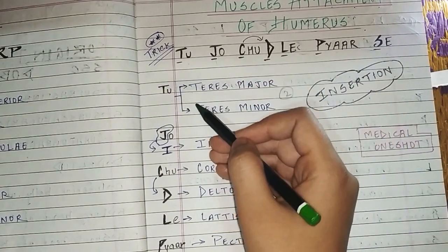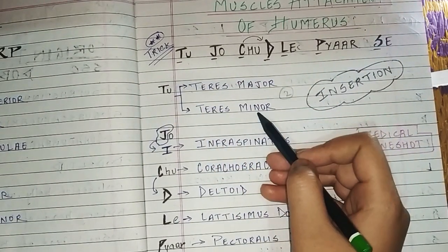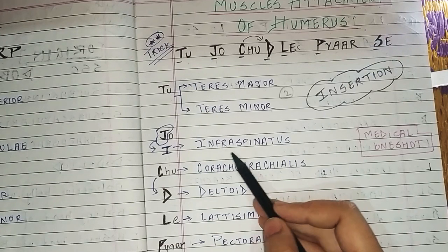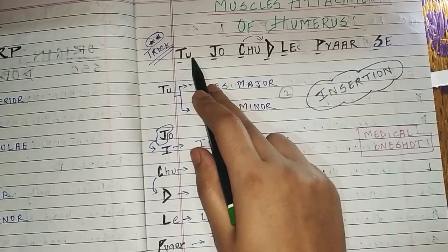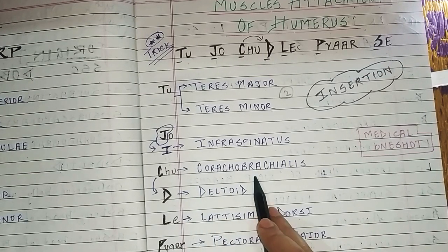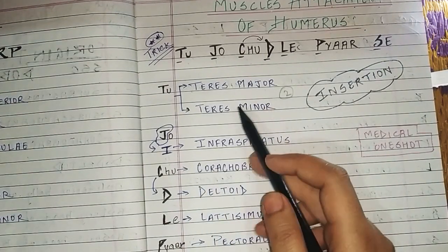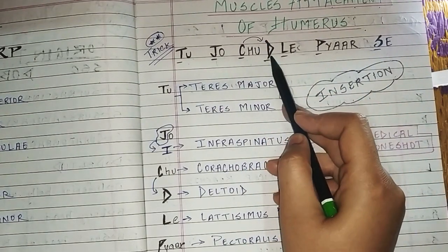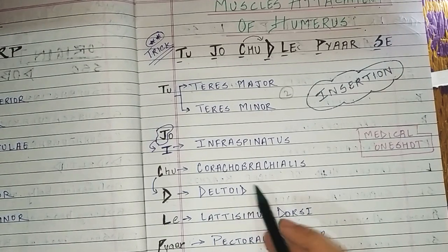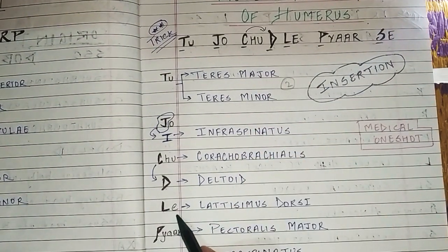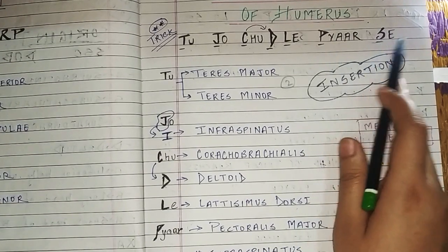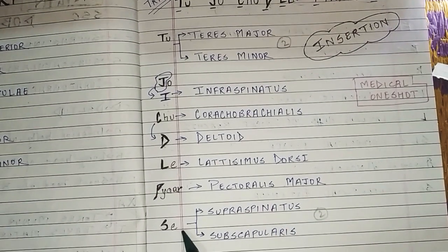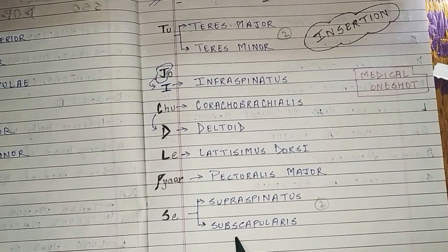Let's go through the insertion trick again lovingly. T — Teres Major and Teres Minor. J, and before J comes I — Infraspinatus muscle. C — Coracobrachialis. After C comes D — Deltoid. L — Latissimus Dorsi. P — Pectoralis Major. S — Supraspinatus muscle and Subscapularis muscle. Here also two muscles for T and two for S.